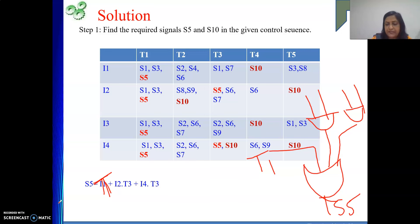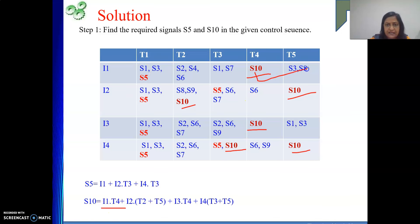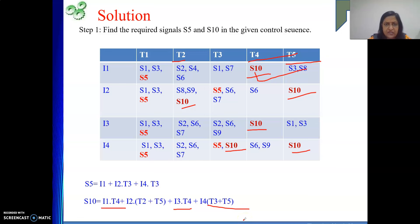To be clear: S5 = T1 + I2·T3 + I4·T3, where T1 is the step, not instruction I1. Next, for S10 — it appears for I1 at T4; for I2 at T2 and T5; for I3 at T4; and for I4 at T3 and T5. So: S10 = I1·T4 + I2·(T2 + T5) + I3·T4 + I4·(T3 + T5). It is very simple — find the signal in the control sequence; if a control signal appears in all instructions at a particular step, write only that step number in the logic function.